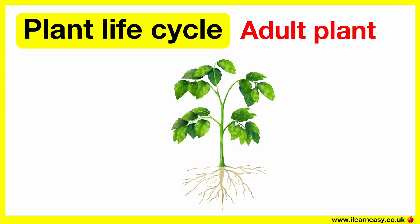As the plant continues to grow, it may grow flowers that will then turn into fruits and make their own seeds. This is when pollination and fertilization occurs.